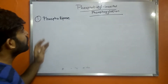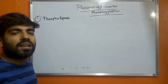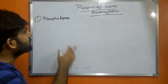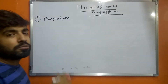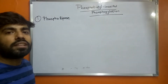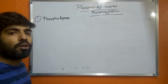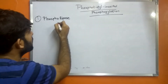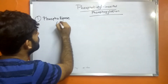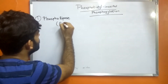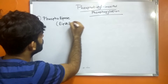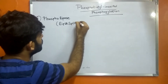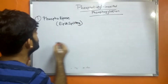The phospholipase enzyme is also known as the lipid-splitting enzyme. This enzyme breaks the bonds that are responsible for the formation of a phospholipid, hence they are known as lipid-splitting enzymes.